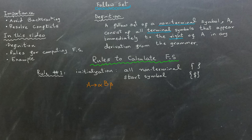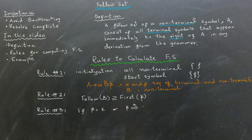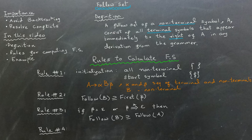Where alpha and beta are sequences of terminals or non-terminals and B is a non-terminal. Rule number two: add the first set of beta to the follow set of B. Rule number three: if beta can be derived to the empty string epsilon, add the follow set of A to the follow set of B. Rule number four: continue applying rules two and three iteratively until no new symbols can be added to the follow sets.